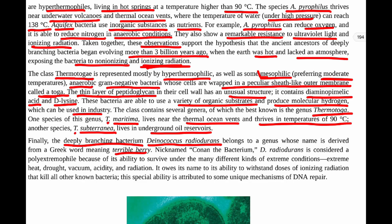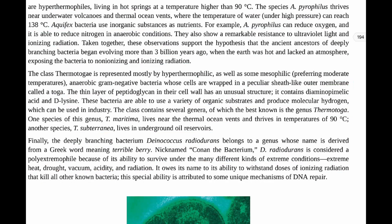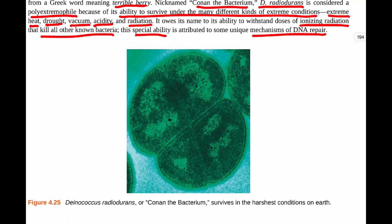D. radiodurans is considered a polyextremophile because of its ability to survive under many different kinds of extreme conditions: extreme heat, extreme drought, a vacuum, acidity, and radiation — extremes of all of those things. It owes its name to its ability to withstand doses of ionizing radiation that would kill all other known bacteria. This special ability is attributed to unique mechanisms of DNA repair. It is the strongest bacteria we know, able to withstand the harshest conditions on Earth.